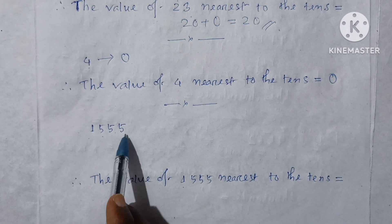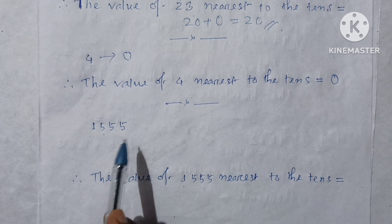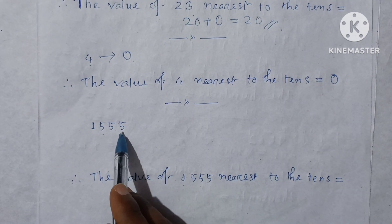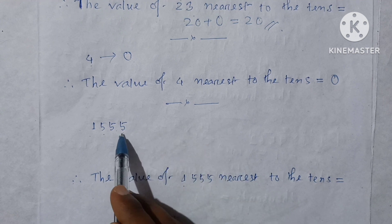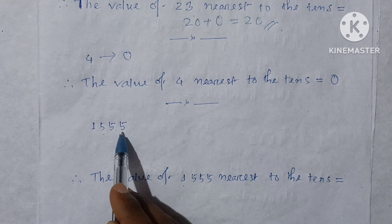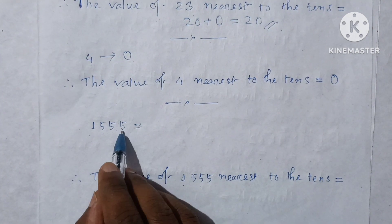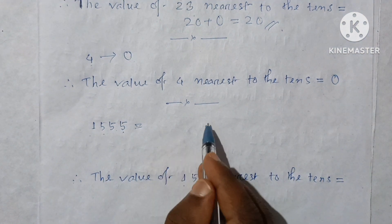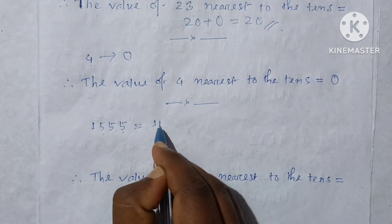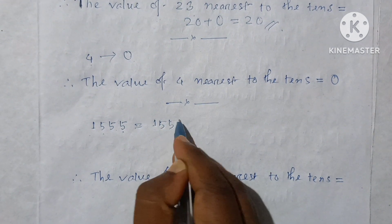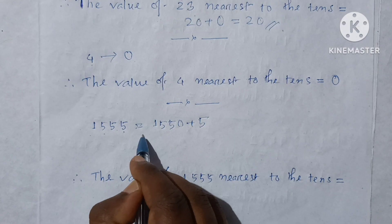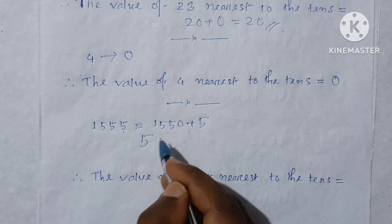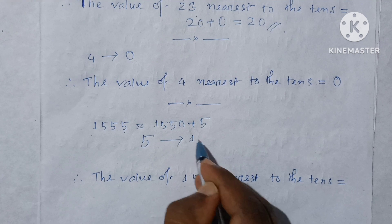One thousand five hundred fifty-five. For the nearest to tens, look at the units digit. The units digit is 5. Write down 1550 plus 5. Since 5 rounds off to ten, we write plus 10.